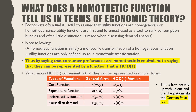So what does a homothetic function tell us in terms of economic theory? Economists often find it useful to assume that utility functions are homogeneous or homothetic, since utility functions are first and foremost used as a tool to rank consumption bundles, and often little distinction is made when discussing demand analysis. Note that a homothetic function is simply a monotonic transformation of a homogeneous function, and utility functions are only defined up to a monotonic transformation. Thus, saying consumer preferences are homothetic is equivalent to saying they can be represented by a function that is homogeneous of degree 1.